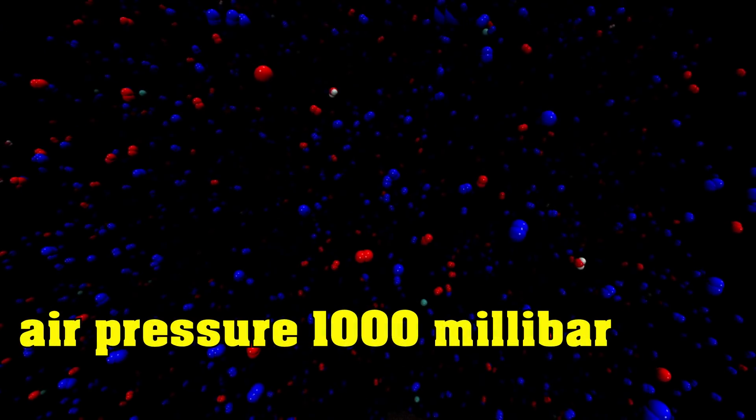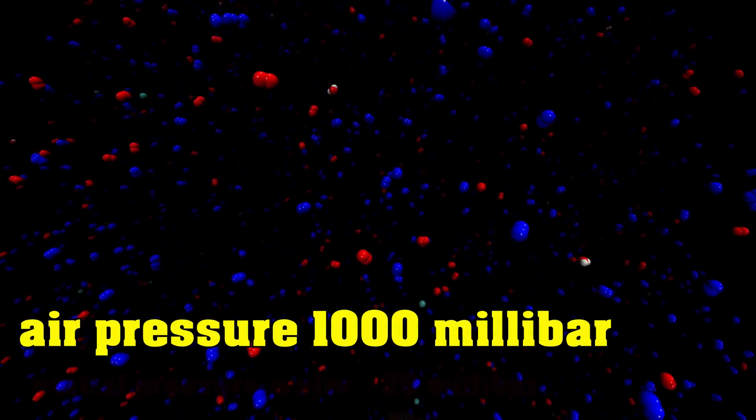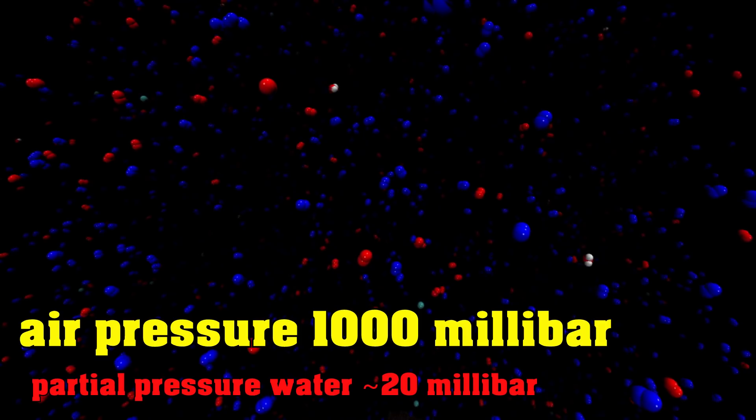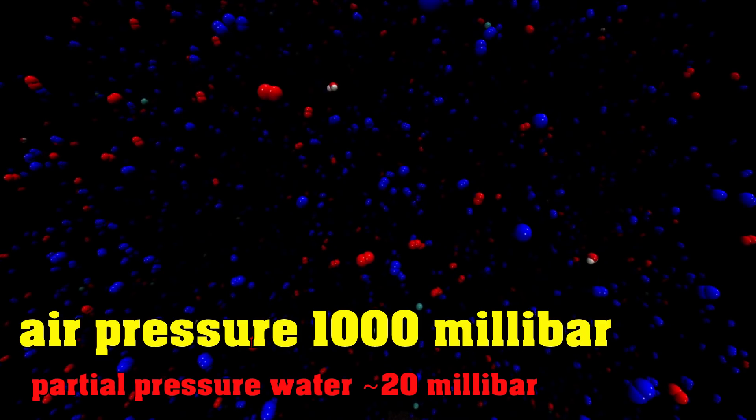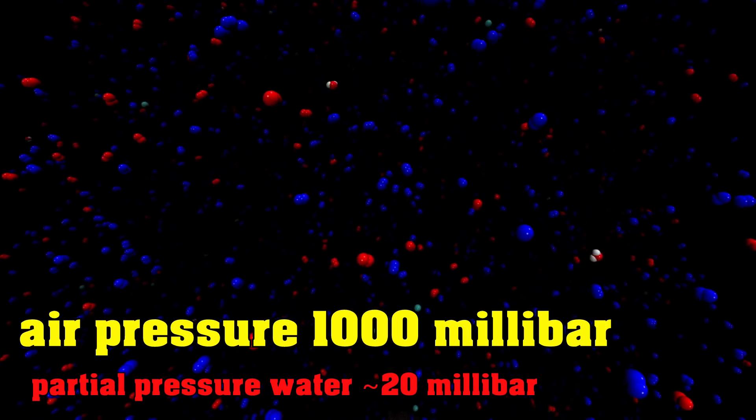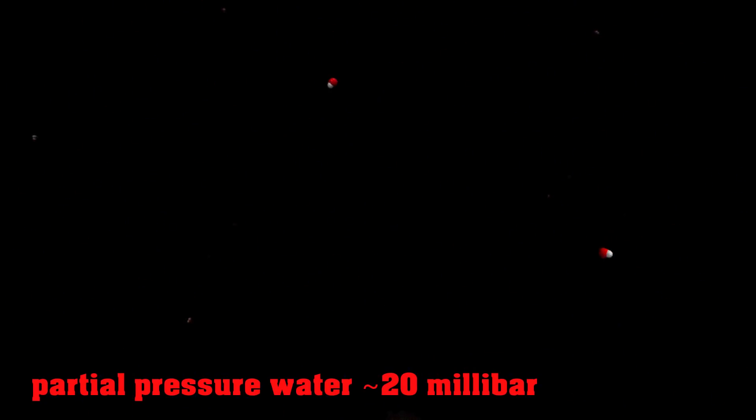Now, one atmosphere is one bar of pressure, 1,000 millibars. So 2% of that equates to about 20 millibar. Alternatively, if I just delete all of the air, which you can do quite easily in a simulation like this, what you have left is 20 millibar vapor pressure of water.